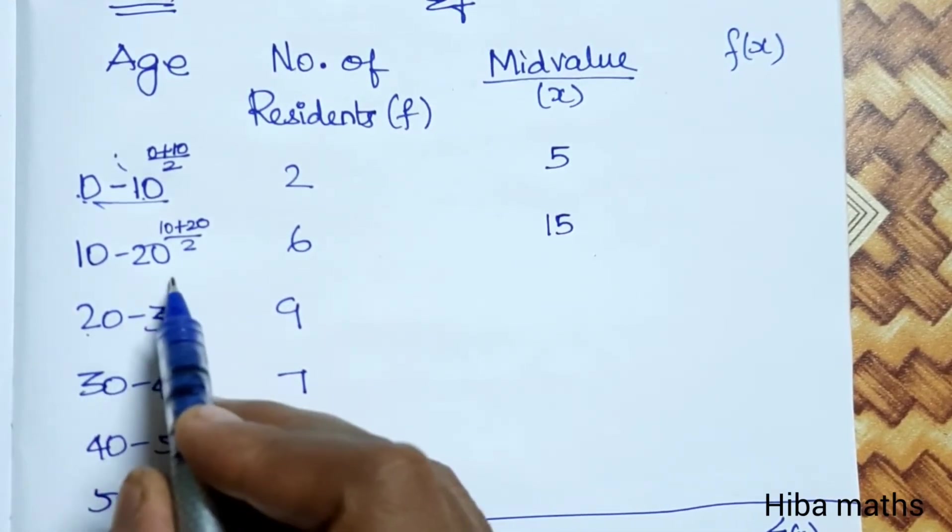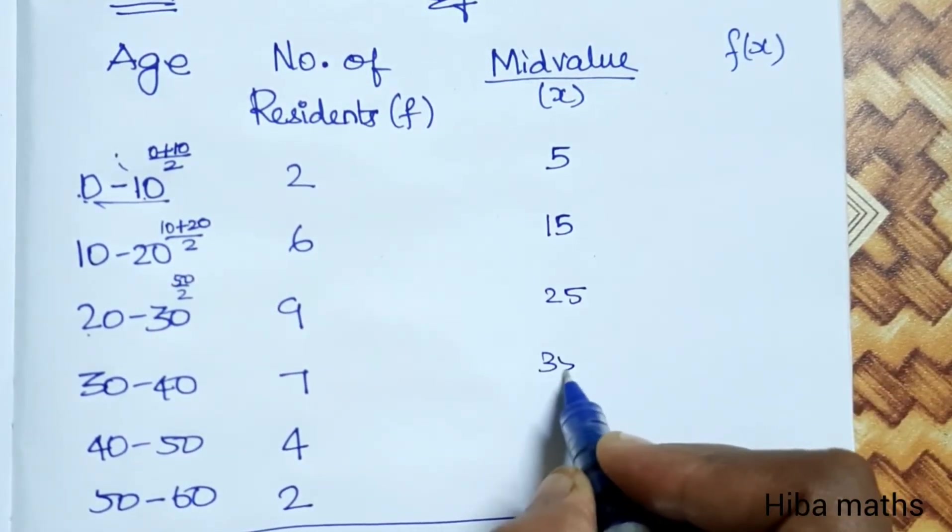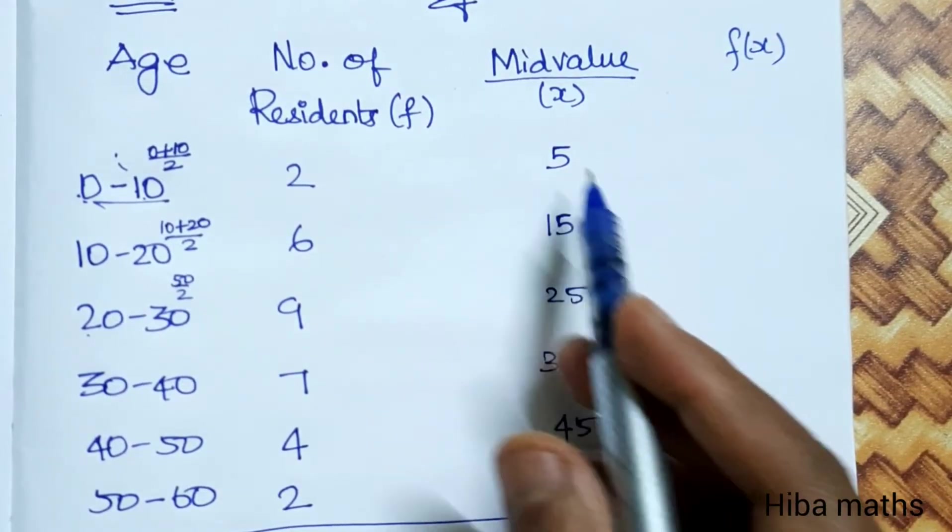Next: 30 plus 40 is 70, divided by 2 is 35. 40 plus 50 is 90, divided by 2 is 45. 50 plus 60 is 110, divided by 2 is 55.